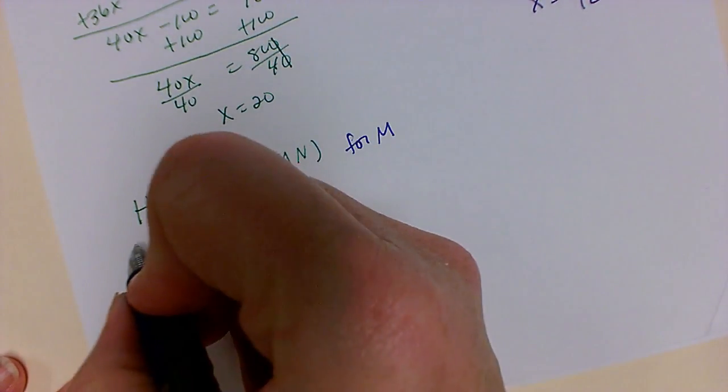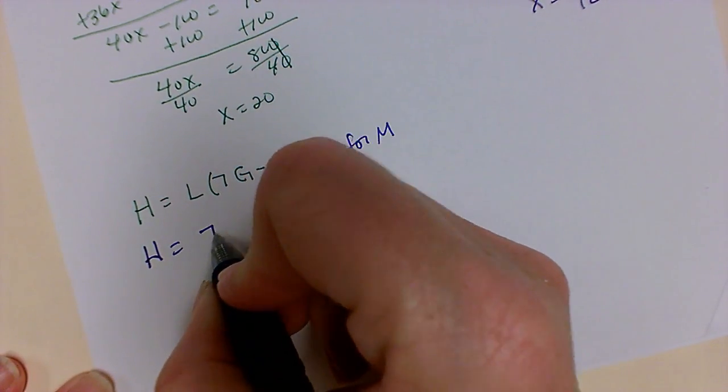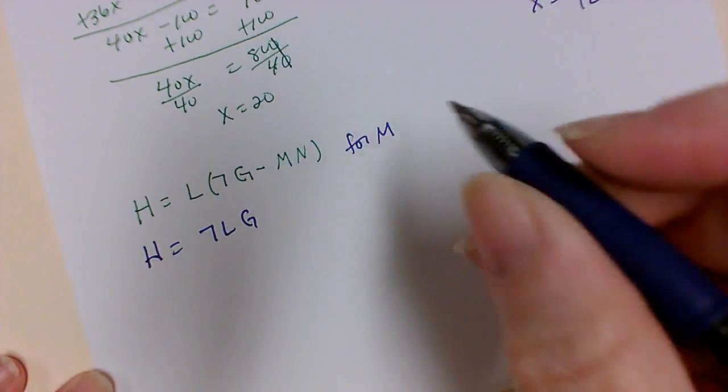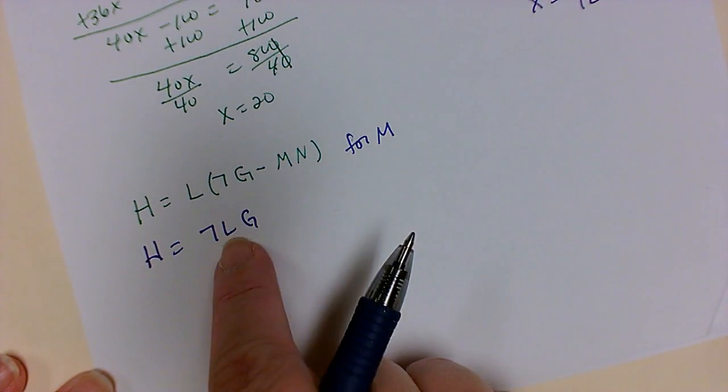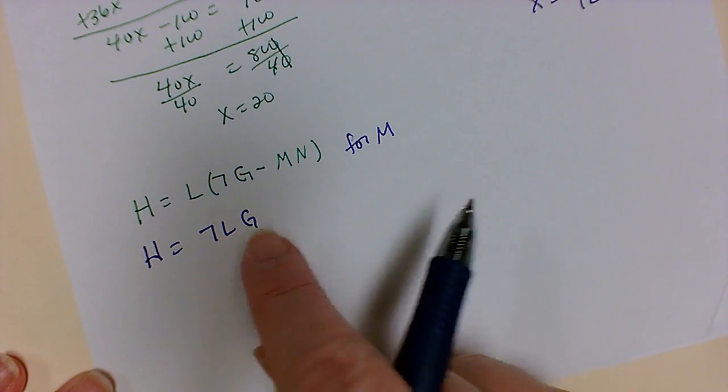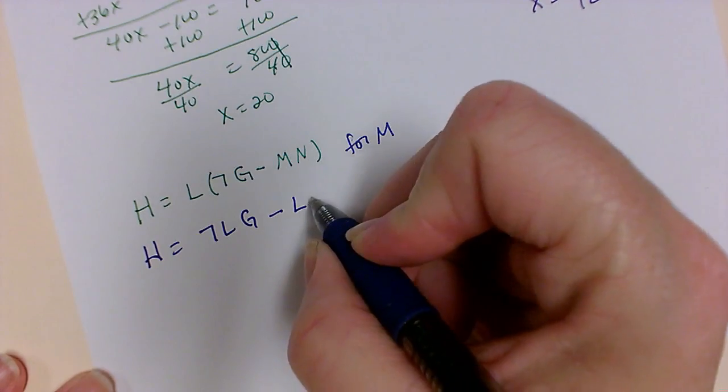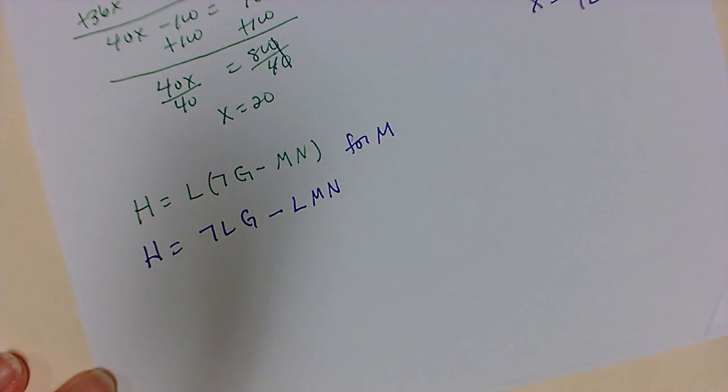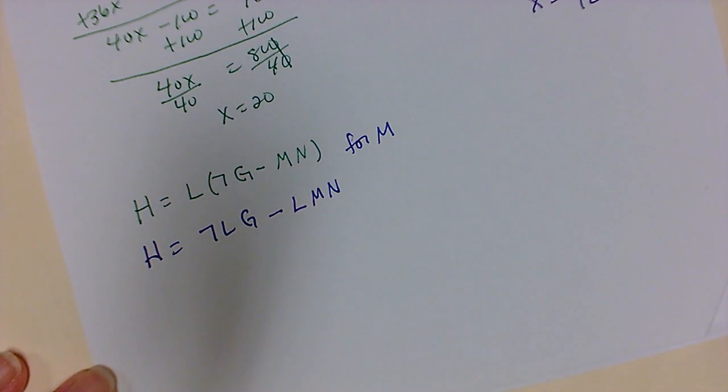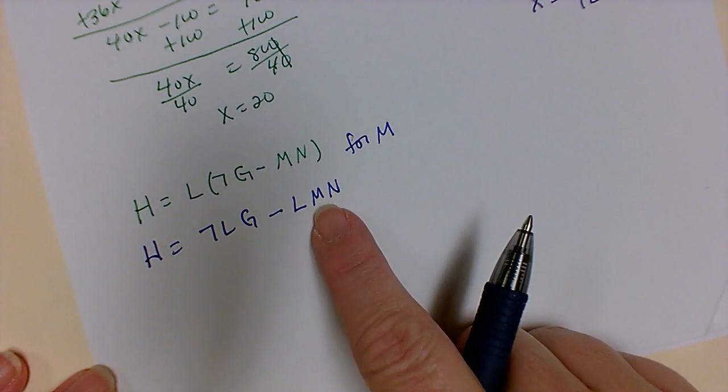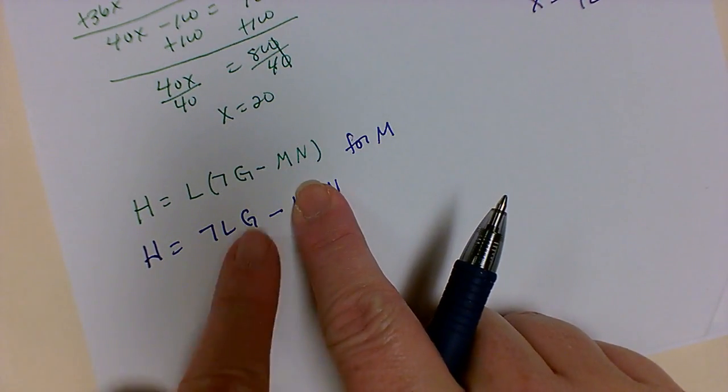It wouldn't be feasible to divide by this over here because then we'll get a really complicated answer. So what I'm going to do is I am going to take my h is equal to 7lg. I like to keep my variables together. So when I multiply the l times this term, I'm going to put it with my letters. And you can put it in any order because multiplication doesn't matter. Minus lmn. Because I have to multiply the l by both terms.